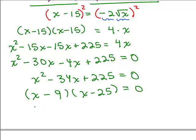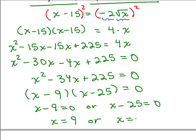Next, we set each factor equal to 0: either x minus 9 equals 0, or x minus 25 equals 0, giving x equals 9 or x equals 25. Recall that twice we squared both sides of the equation, and any time you do that you especially have to check your answers. You can get something that appears to be a solution but does not check — those are called extraneous solutions. So we go back to the original equation and check both x equals 9 and x equals 25.